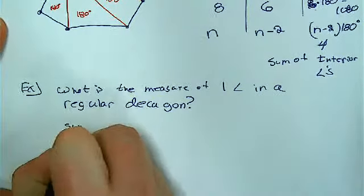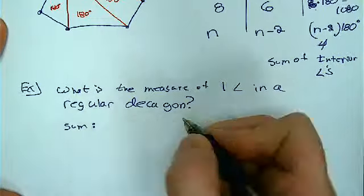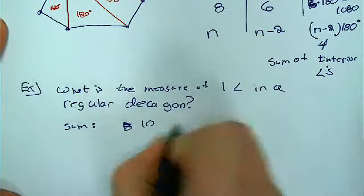So the sum, well, let's see, the decagon is how many sides? Ten sides.